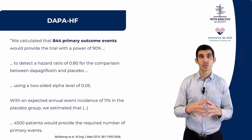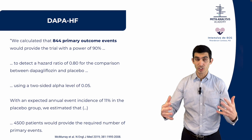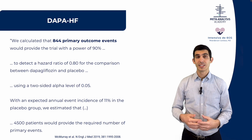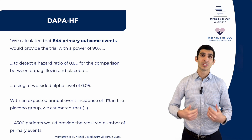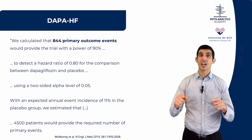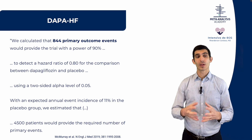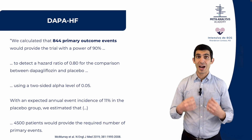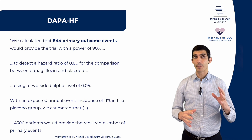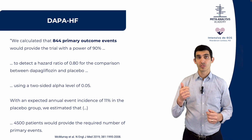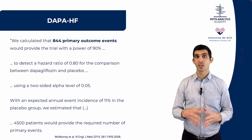They said they need 844 events, so they need to recruit enough patients to have 844 events. They use a power of 90% — power is the ability to detect a significant difference between groups if such a difference exists. And the difference they're anticipating is a hazard ratio of 0.80 between dapagliflozin and placebo.